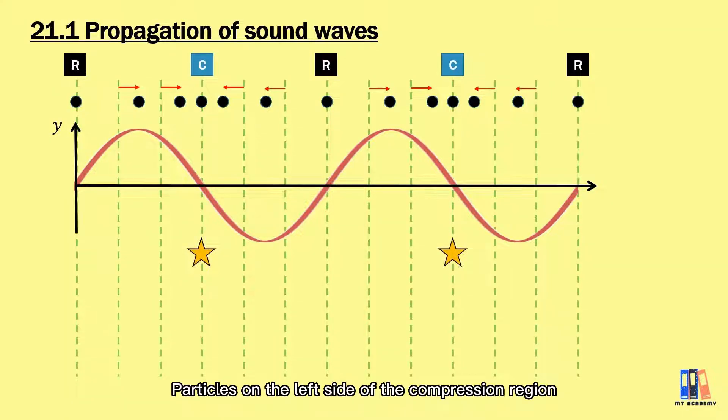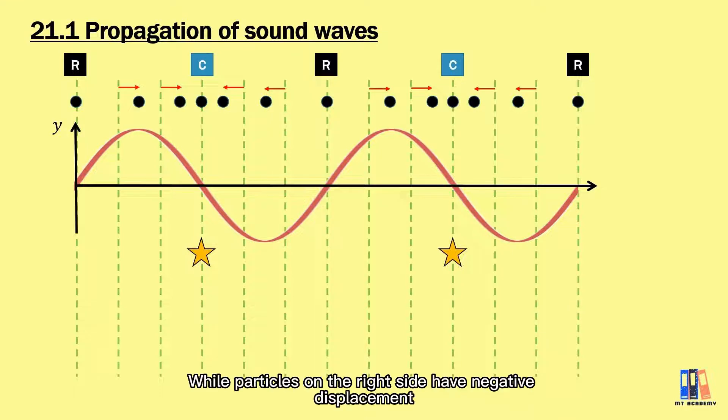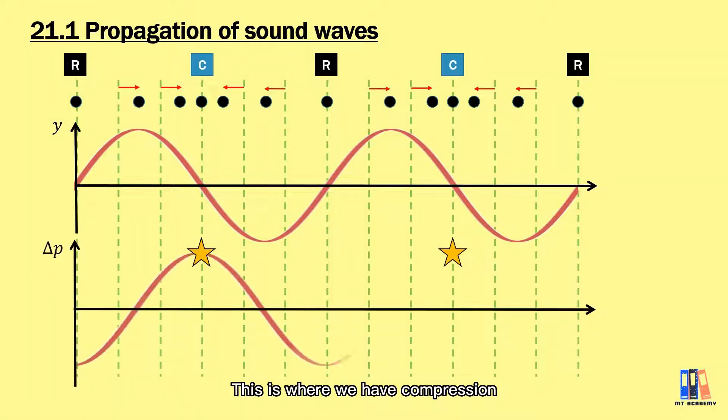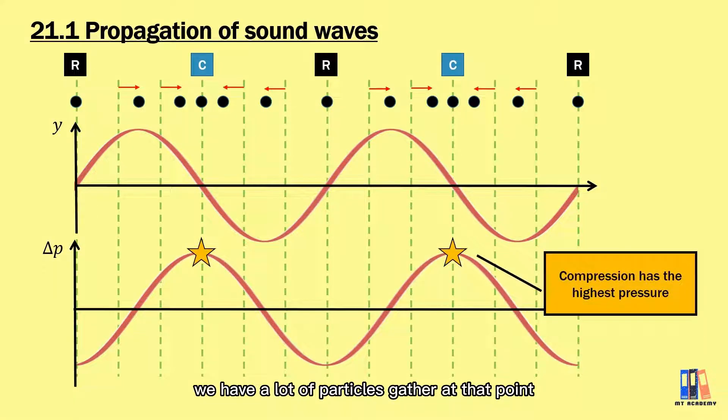Let's focus at the compression region. Particles on the left side of the compression region has positive displacement, which means they are moving to the right, approaching to the compression region. While particles on the right side has negative displacement. This is where we have compression. We have a lot of particles scattered at that point and these create high pressure regions.